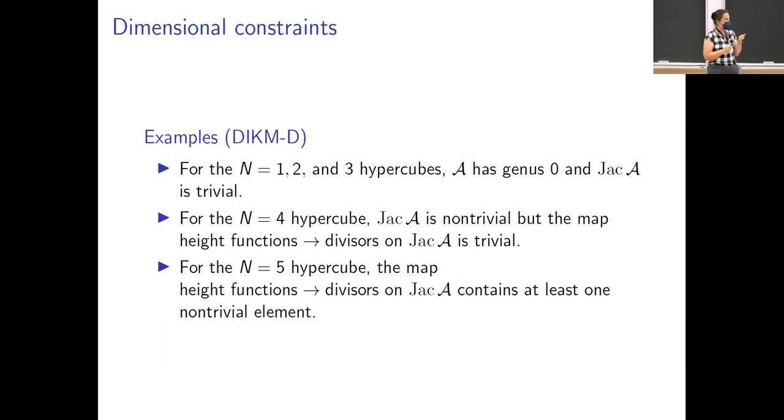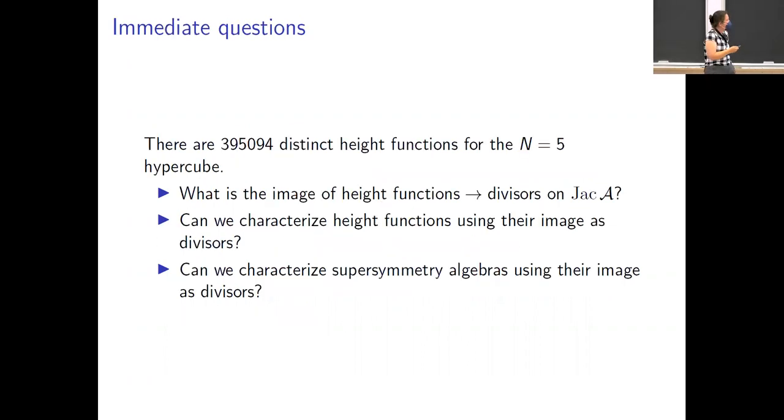Now, this was worked out by Doran, Iga, Kostiuk, and Stefan Mendez-Diez, that for the n equals five hypercube, if you do this map to divisors, you get one thing that is non-trivial at least. So that's where Amanda and I came in in this process. We said, okay, there's 395,000 some height functions. We know that there is at least one non-trivial thing. Is there more than one non-trivial thing? We didn't know when we started looking at this.